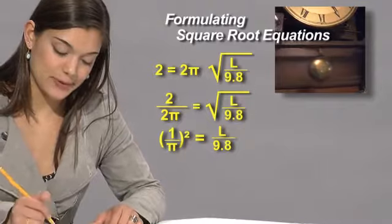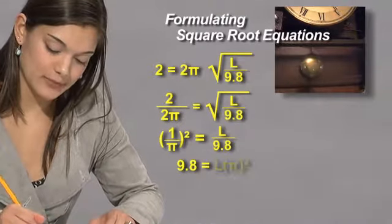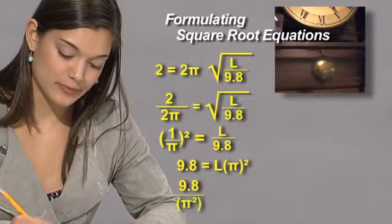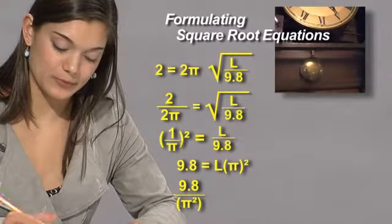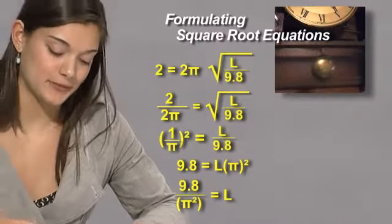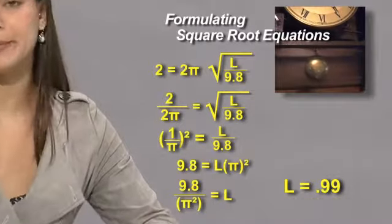All we have to do is cross-multiply to get 9.8 equals L times pi squared, and then 9.8 divided by pi squared equals L. If we plug that into a calculator, we get L equals .99, or about 1 meter.